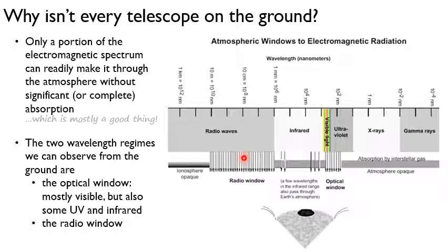For observing x-rays and gamma rays, you'd need to go into space. There are telescopes in space to observe these other wavelength regions as well, and we'll talk about that in a future lecture. We have the optical window and the radio window, so that's what we're going to focus on for ground-based telescopes.